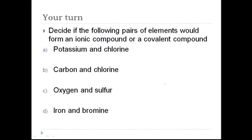Here are some examples for you to do on your own. Hit pause and come back and check your answers. Potassium is a metal and chlorine is a nonmetal, so they're going to transfer electrons and have an ionic bond. Carbon and chlorine are both nonmetals on the right-hand side of the periodic table, so they're going to share electrons in a covalent bond. Oxygen and sulfur are also both nonmetals, so they share in a covalent bond. Finally, iron and bromine — iron is in the middle of the periodic table but it's still a metal, a transition metal. Bromine is a nonmetal on the right-hand side. So they're going to make an ionic bond.